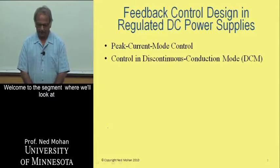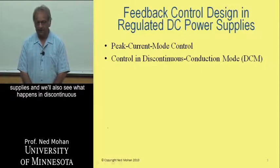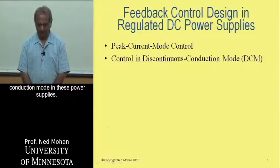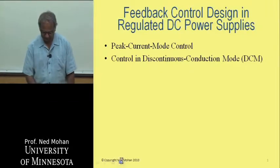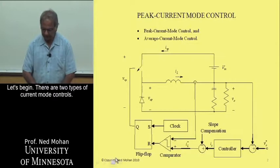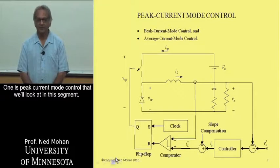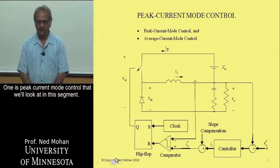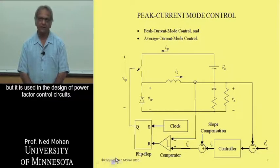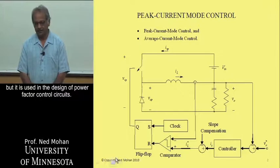Welcome to this segment where we will look at peak current mode control in regulated DC power supplies, and we will also see what happens in discontinuous conduction mode in these power supplies. There are two types of current mode controls: peak current mode control, which we will look at here, and average current mode control, which is used in the design of power factor control circuits.